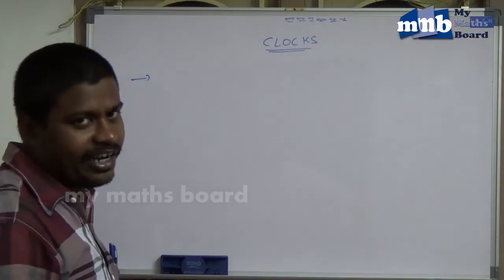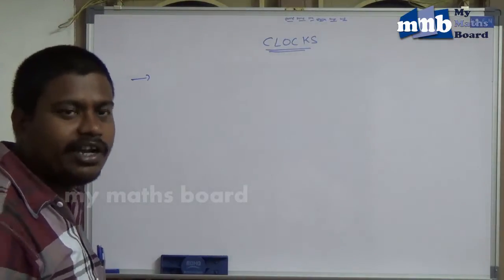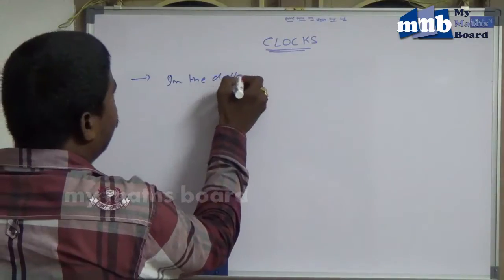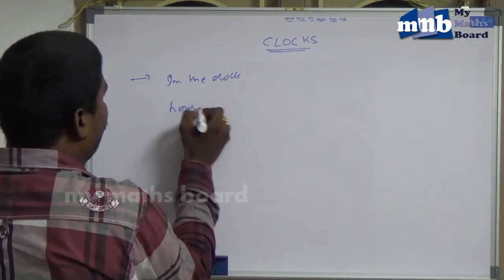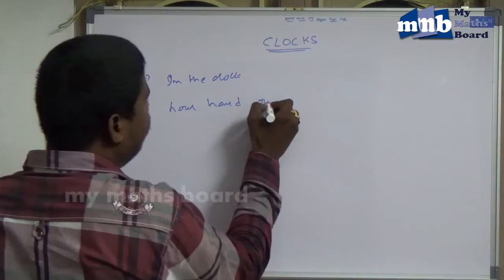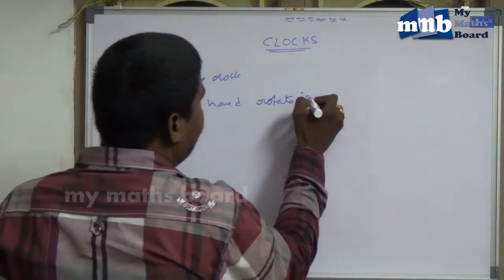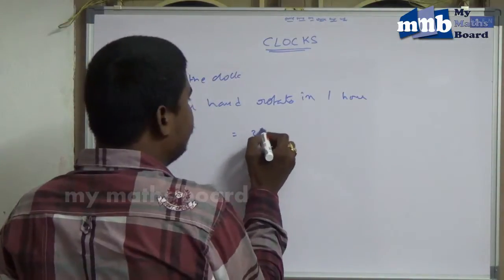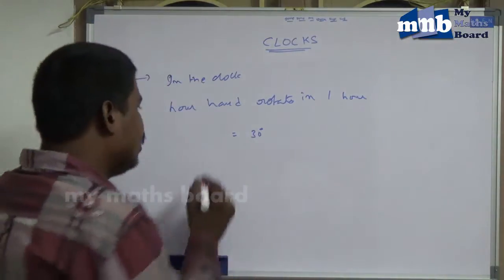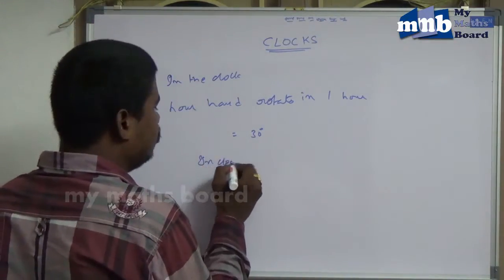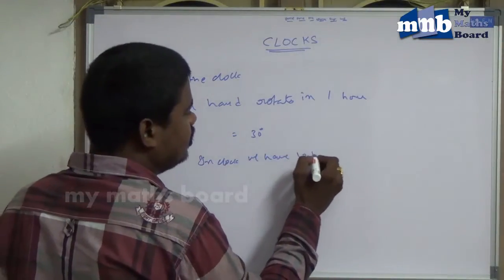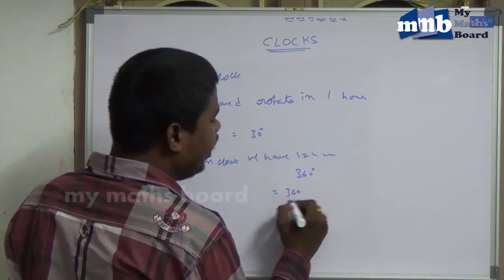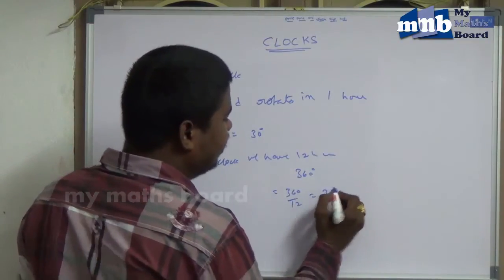Later we will discuss the minute hand, but for now we will discuss the hour hand. In the clock, the hour hand rotates 30 degrees in one hour. We have 12 hours and 360 degrees in a clock, so 360 divided by 12 equals 30 degrees.